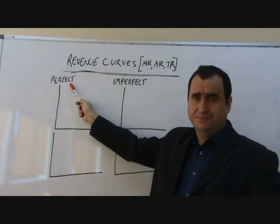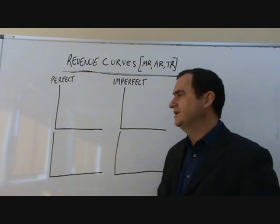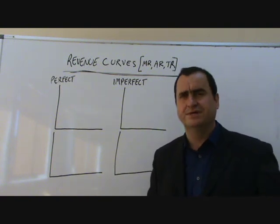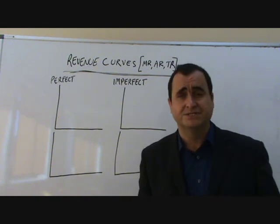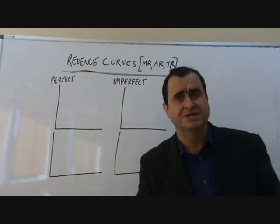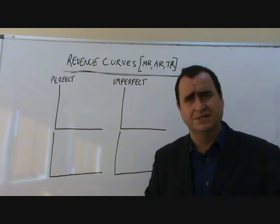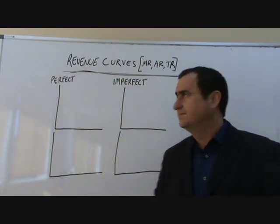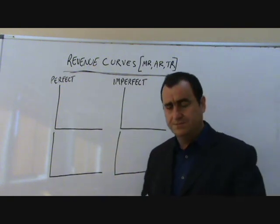Perfect competition is a market structure where there are homogenous goods — identical goods being made by all firms — many small firms, many buyers, perfect knowledge, and absolutely no barriers to entry. Then we'll look at imperfect competition, which is more realistic: all other kinds of market structure from monopolistically competitive through oligopoly and monopoly. The key point is that goods are not homogenous.